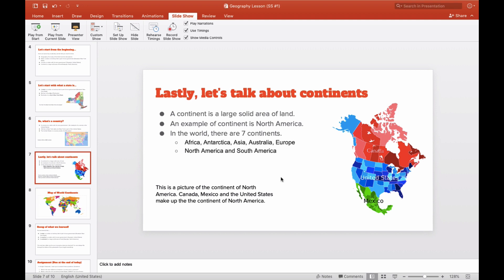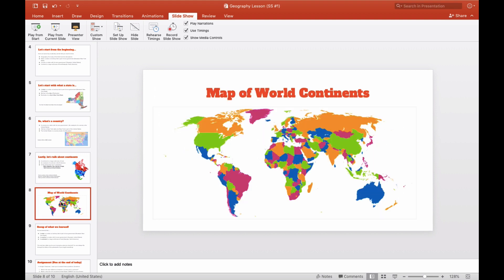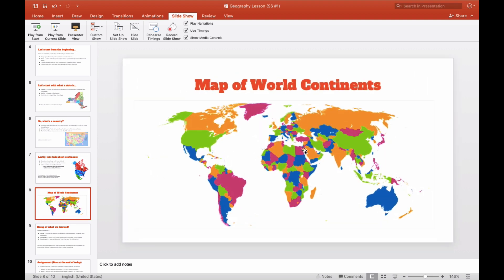So in the world, there are seven continents. I'm pretty sure you guys have heard of that before. Africa, Antarctica, Asia, Australia, Europe, North America, and South America. So if we check out this map right here, this map has all of the continents of the world. Here's North America, where we live. Here's South America, Africa, Europe, Asia, and Australia.